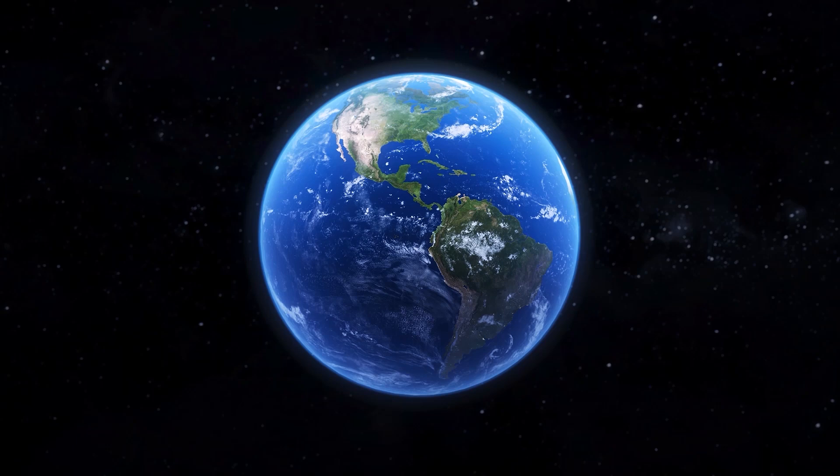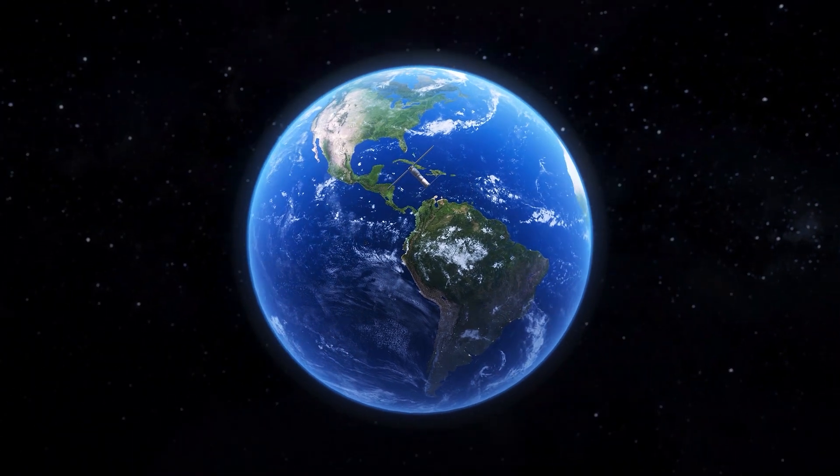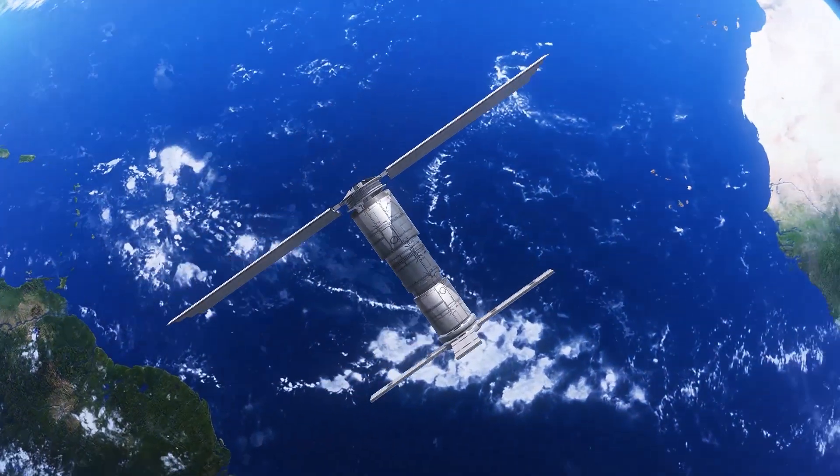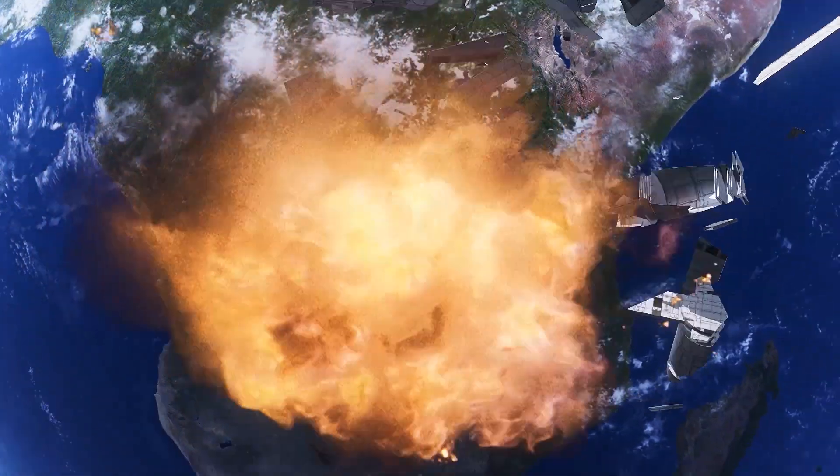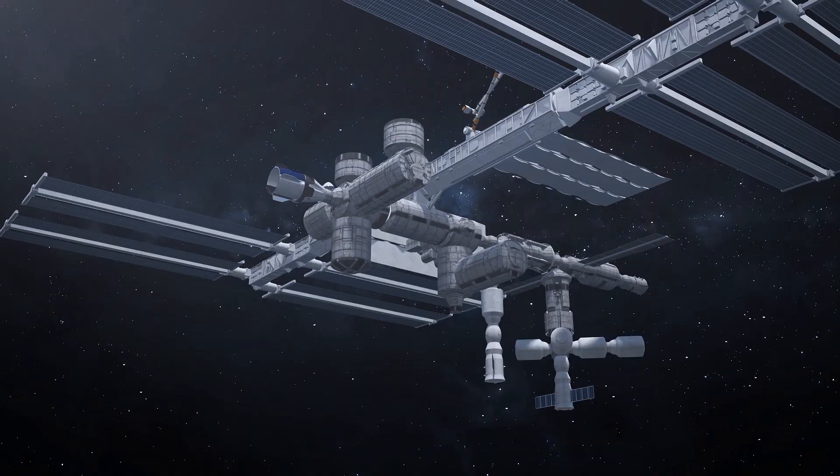A Russian anti-satellite missile test blew up one of its own satellites on Monday, November 15, according to the BBC, resulting in 1,500 pieces of trackable orbital debris and causing astronauts on the International Space Station to shelter in capsules for safety. Political reports that Russia did not warn the U.S. about the test in advance.